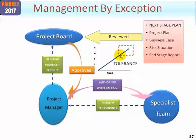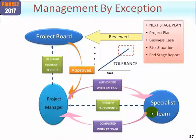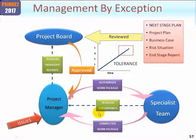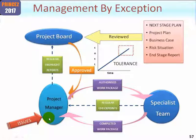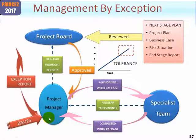What dictates exception is of course the tolerance band, whatever metrics that happens to be. Ultimately when the work package is complete the team advise the project manager, who needs to satisfy themselves that is the case, and now they may well issue the next work package and so the process continues. But let's imagine during this particular stage that an issue is raised — we'll assume it's a request for change. The project manager would log it on the issue register and then carry out an impact analysis to determine the impact if this change were indeed implemented. Let's suppose as a result of that the project manager forecasts that if this change were to be implemented it would blow stage tolerance.